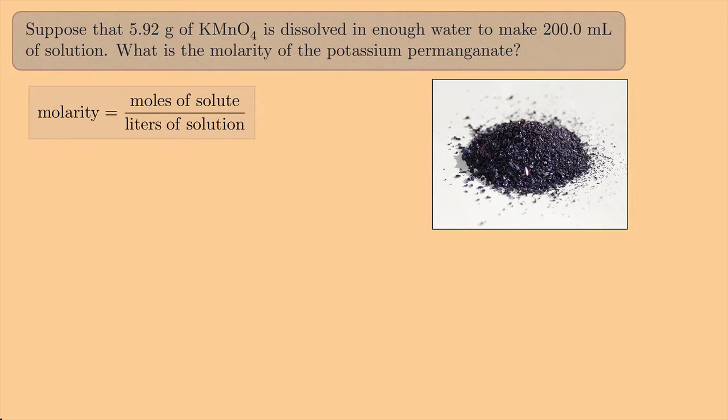So we need to calculate the moles of permanganate that we have. And right now we have the grams of permanganate. That means we're going to have to do a conversion. So we should probably get the molar mass of permanganate. And to do that, we're going to need oxygen, we're going to need potassium, and we're going to need manganese.